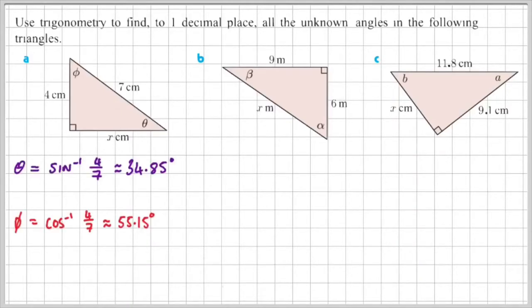Okay, so for part A, these are the trig ratios that I used, and the angles that I got were 34.85 degrees and 55.15 degrees. So one decimal place, you can round that off to 34.9 and 55.2.